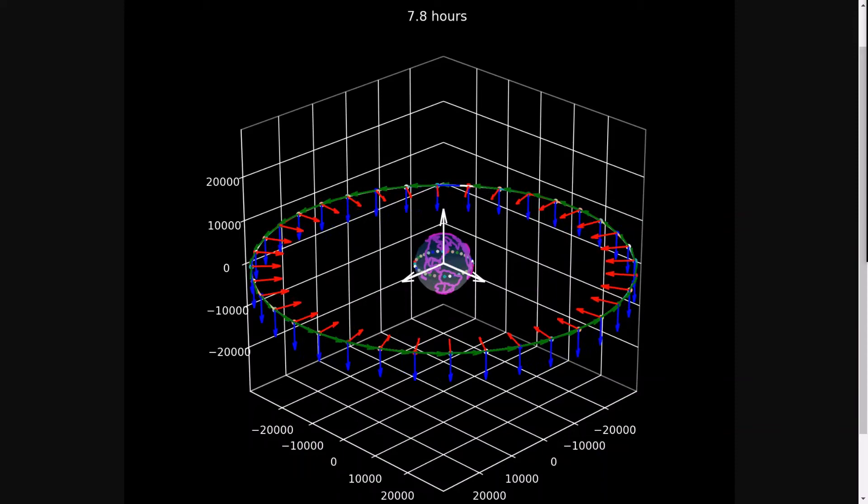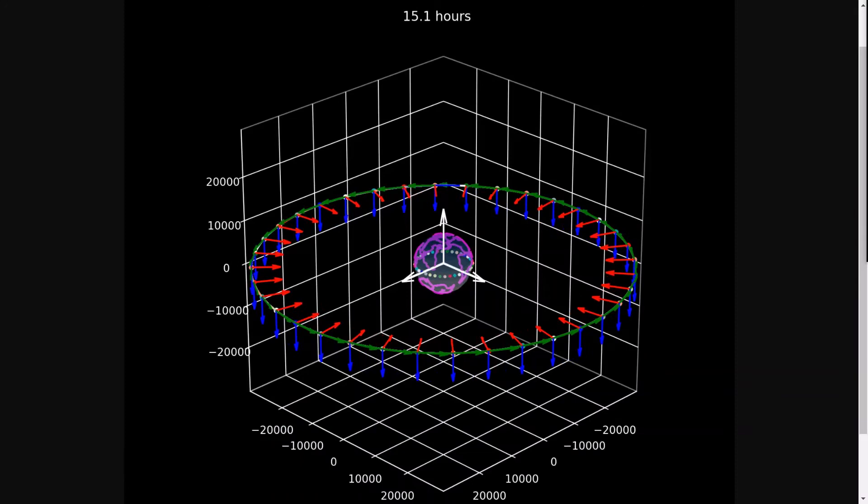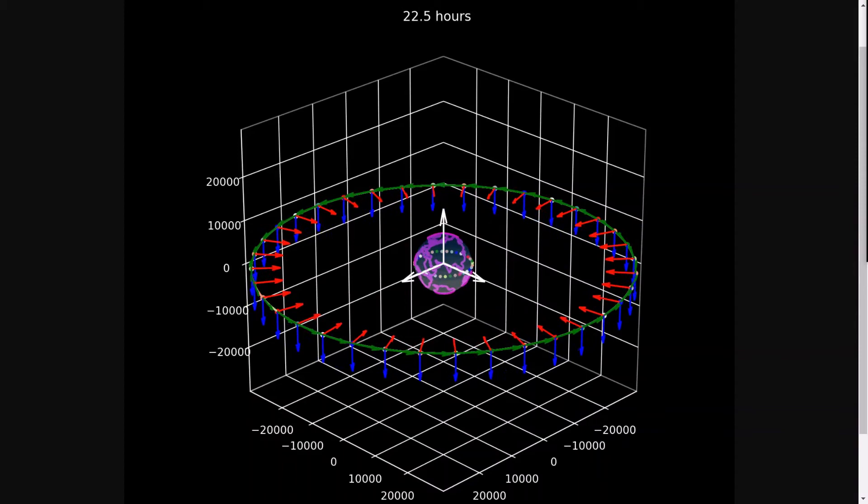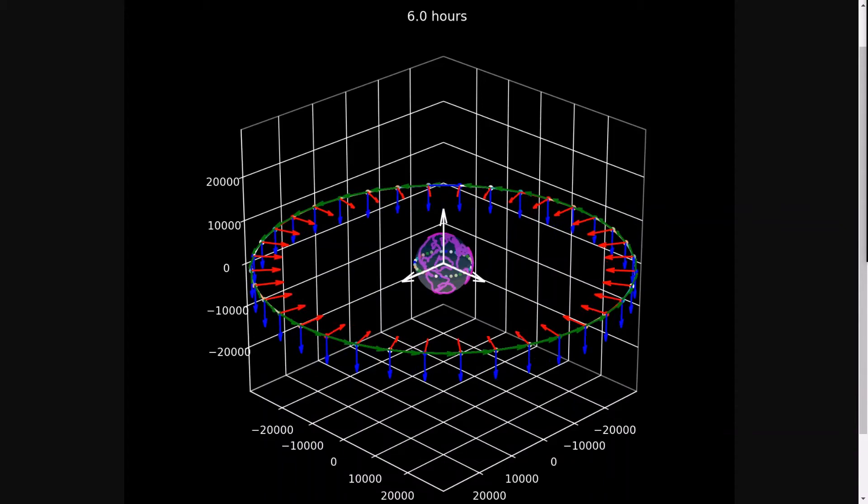One, they have an orbital period equal to one sidereal day, which makes them geosynchronous orbits. Two, they have an orbital inclination of zero degrees, which means that they are always above the Earth's equator, which means their orbital plane is aligned with the Earth's equatorial plane, which also means they always have a latitude equal to zero degrees.